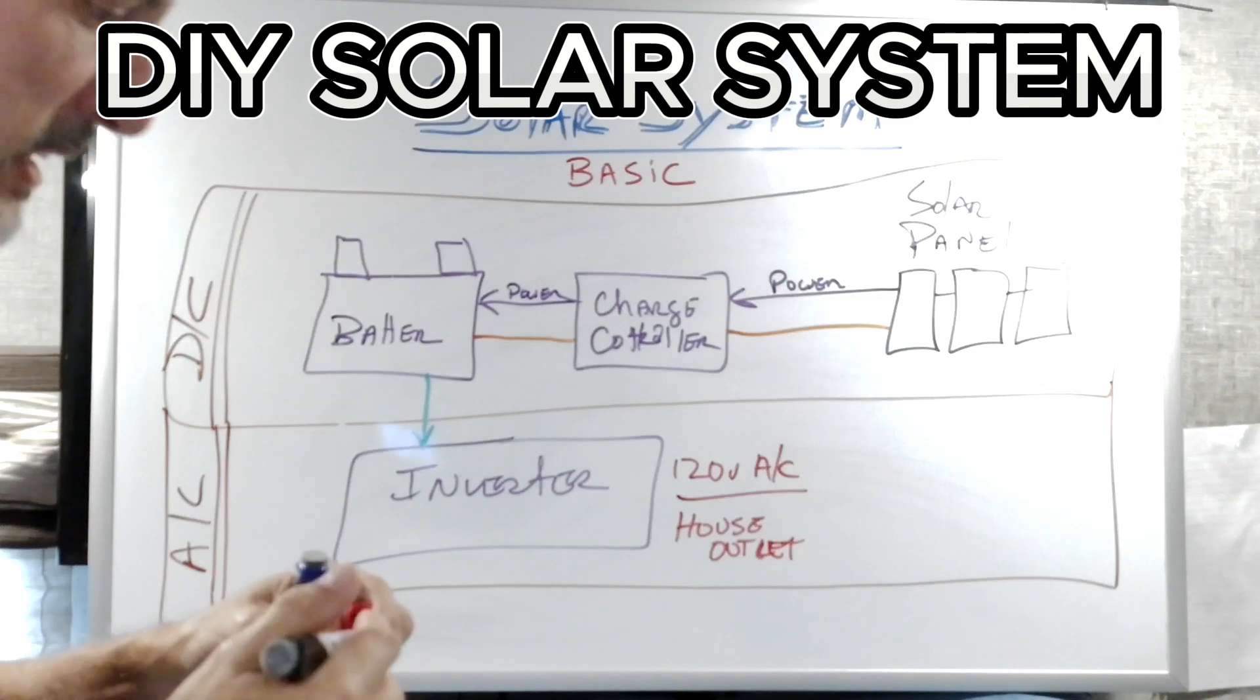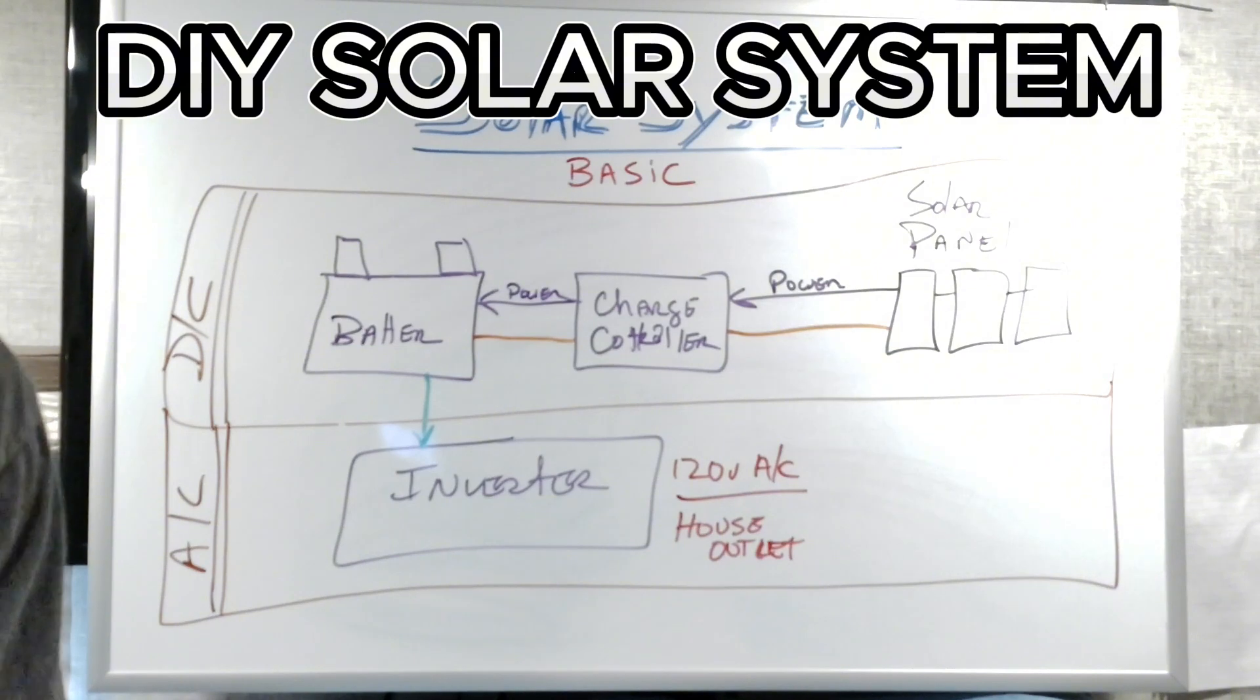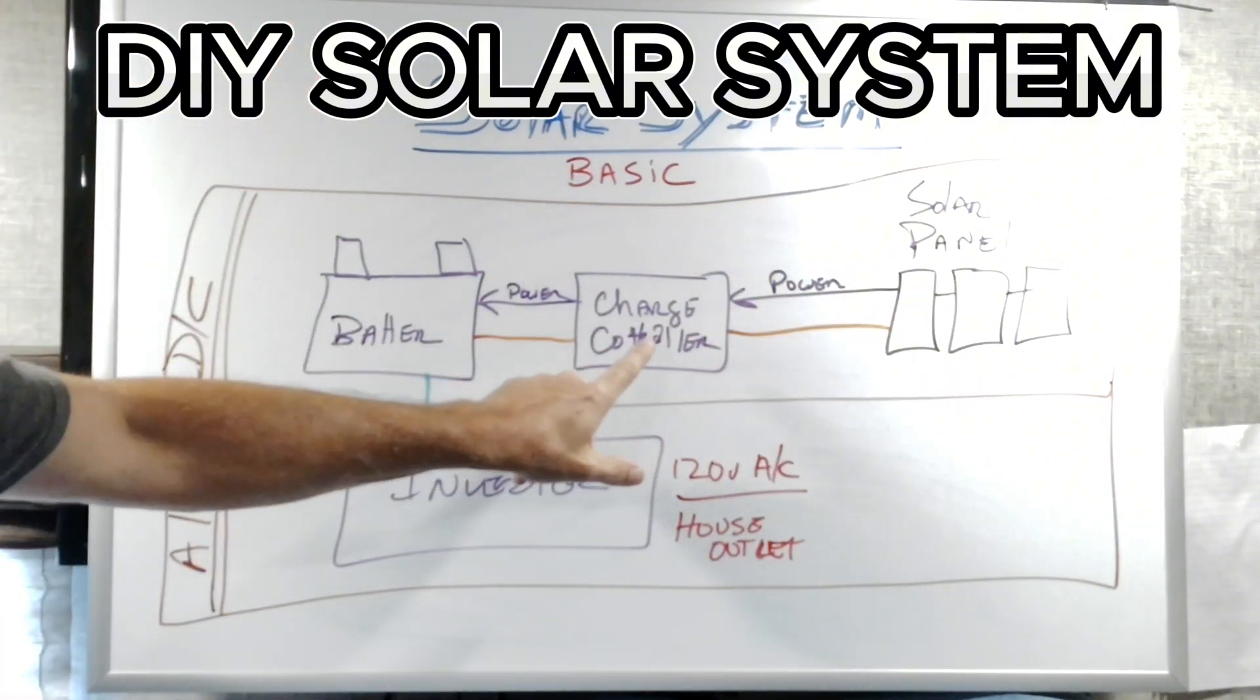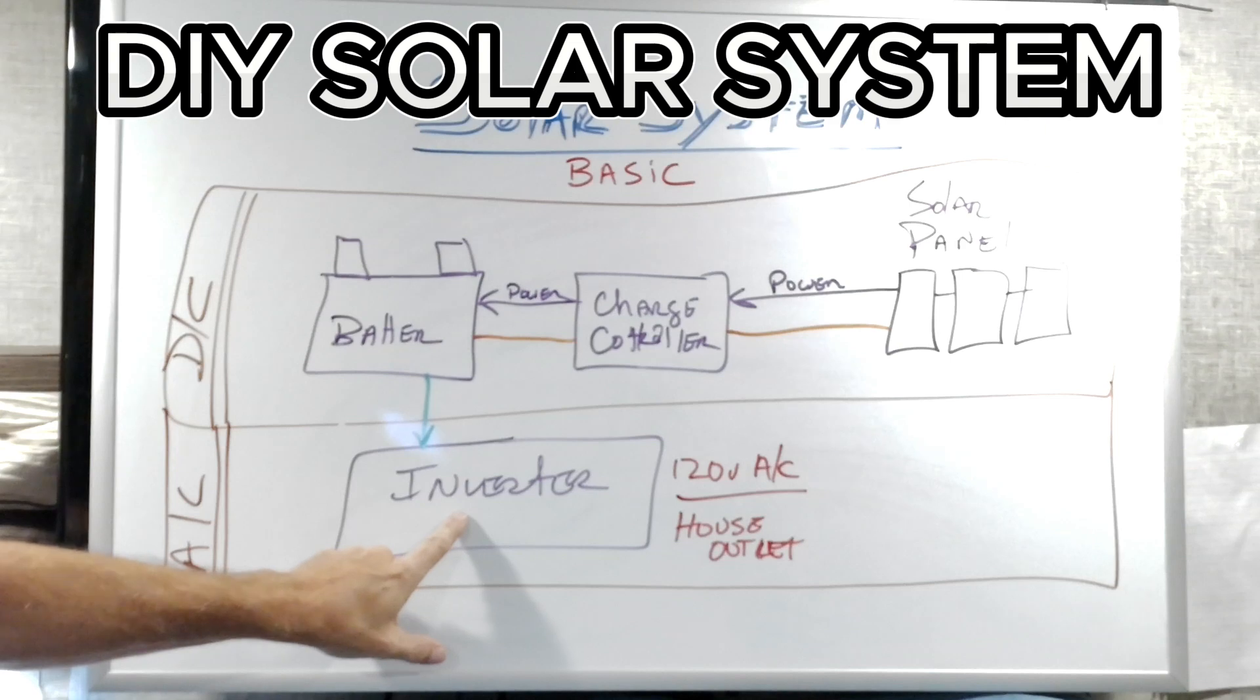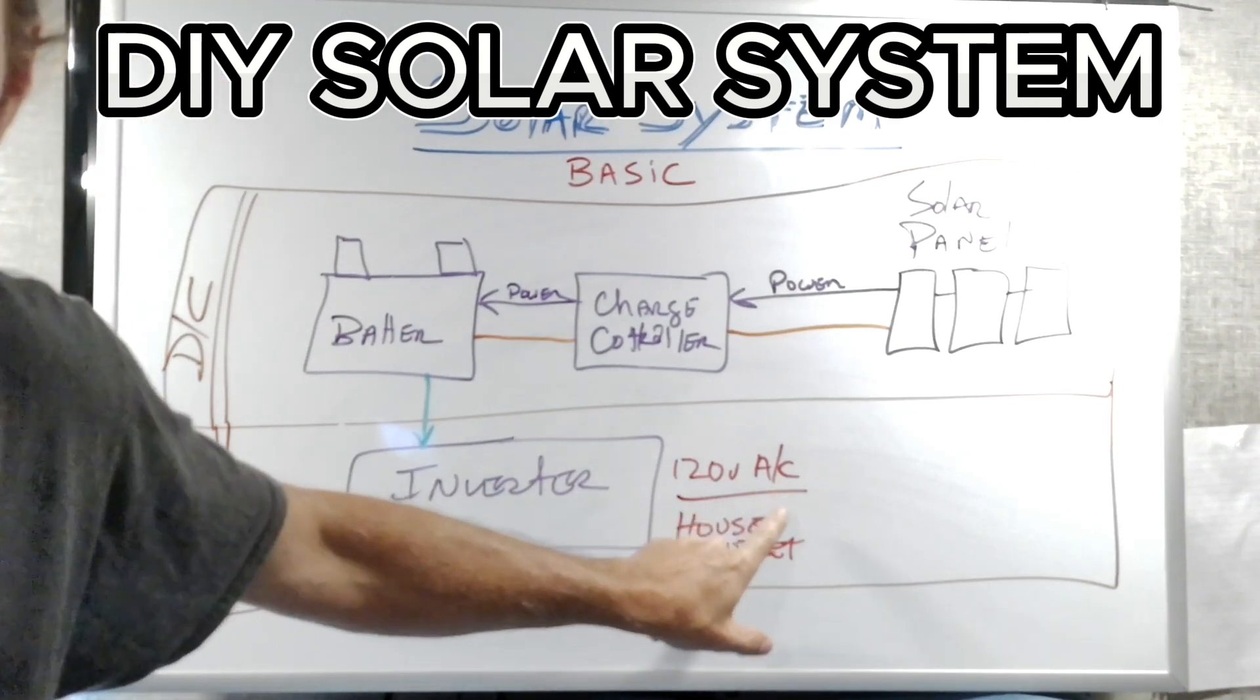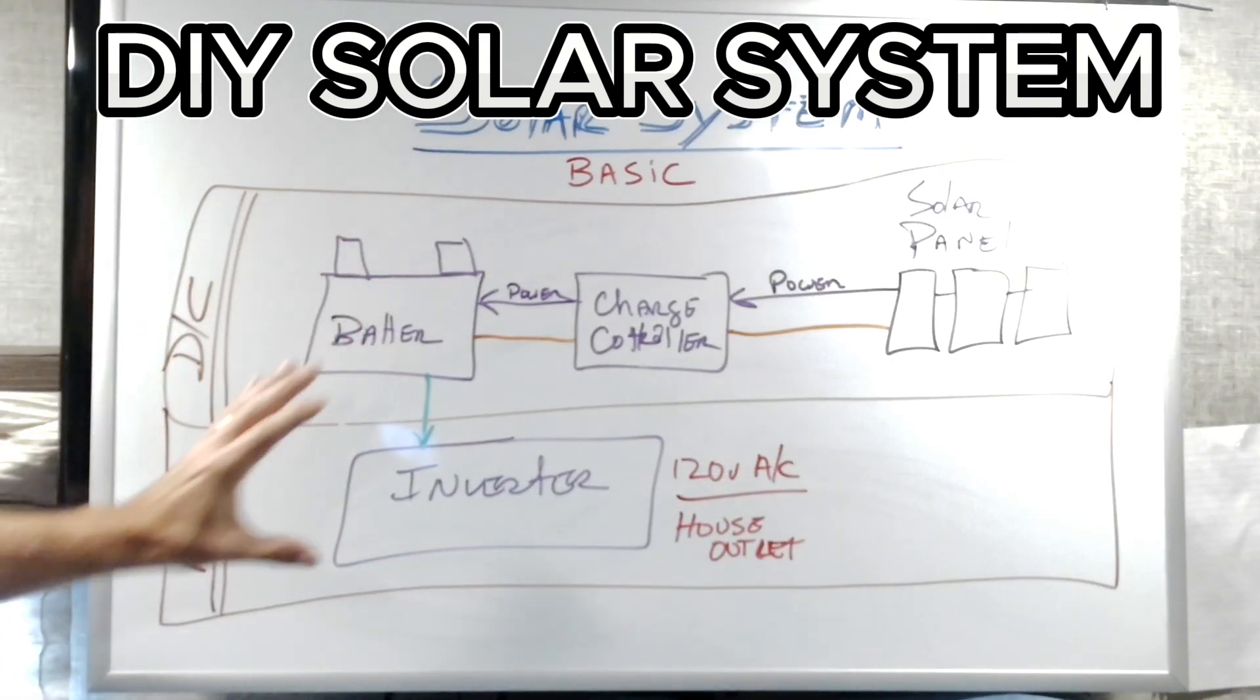So basically, the system is complete at this point. You have all the pieces that you need to take solar power, bring it into a charge controller, put that in the battery, take the electricity out of the battery and move it into the inverter. The inverter puts it out as an AC outlet that you can use to run and power any device that you want. It is as simple as that.